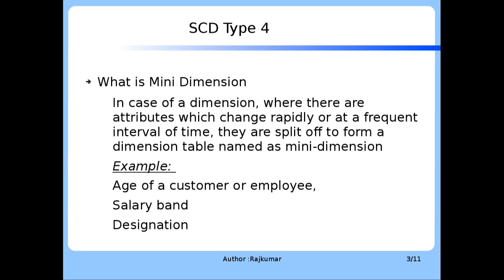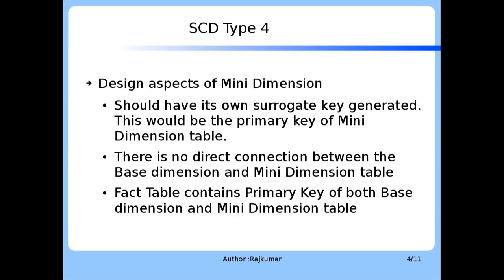The design aspects of Mini Dimension: A Mini Dimension should have its own surrogate key generated, which would be the primary key of the Mini Dimension table. There is no direct connection between the Base Dimension table and the Mini Dimension table. Instead, they are connected to the Fact table. The Fact table therefore can fetch the attributes from both the Dimension tables if required.